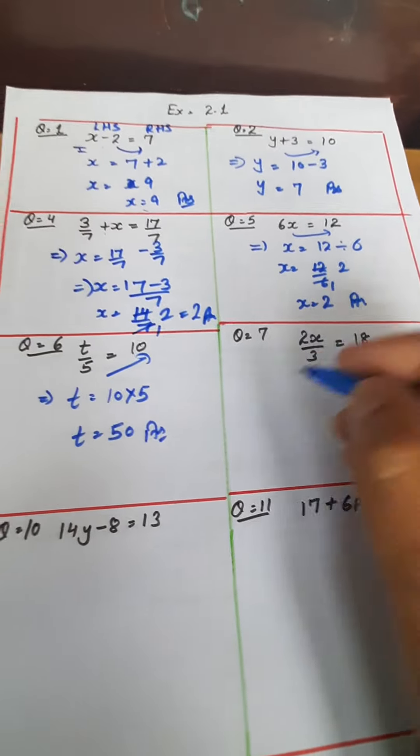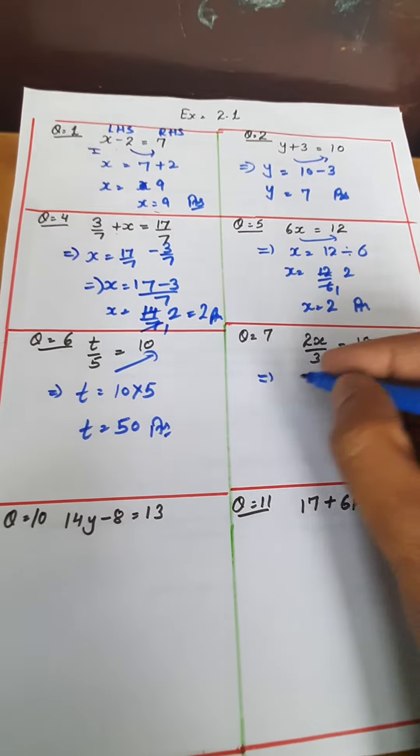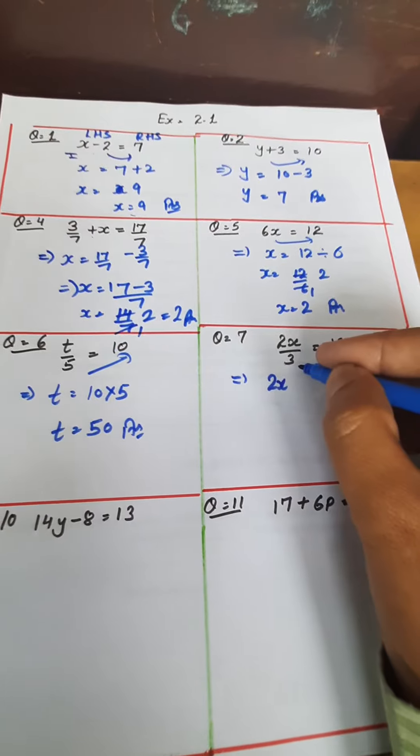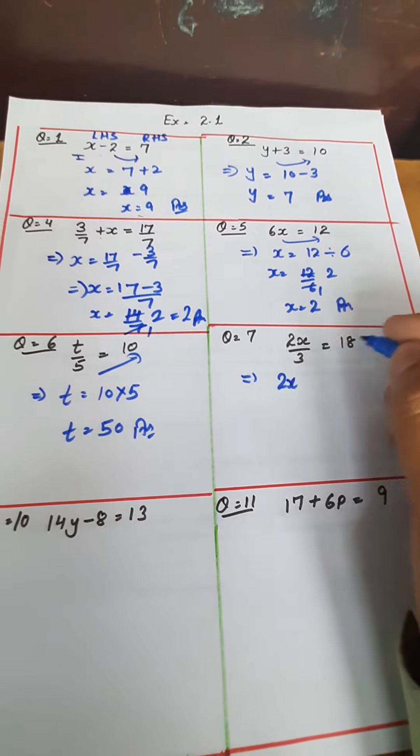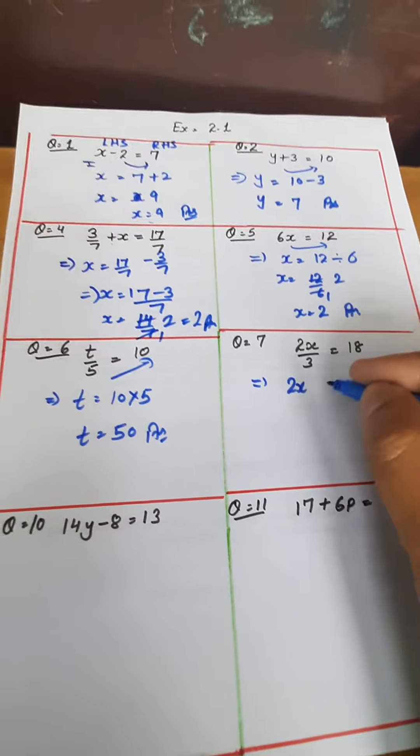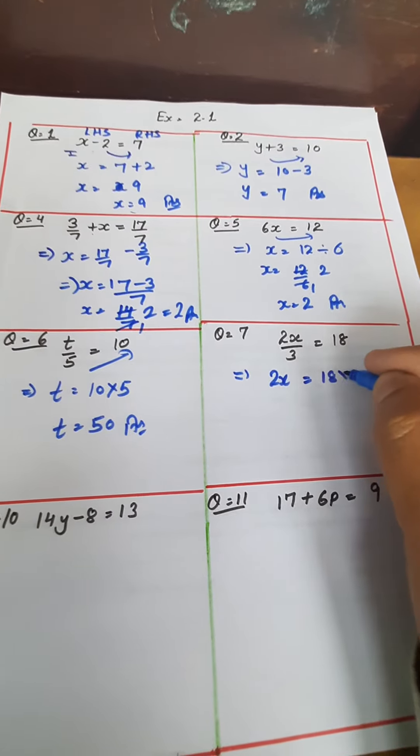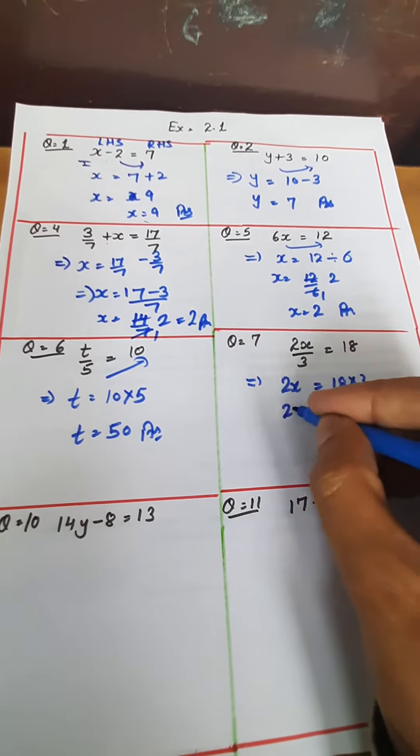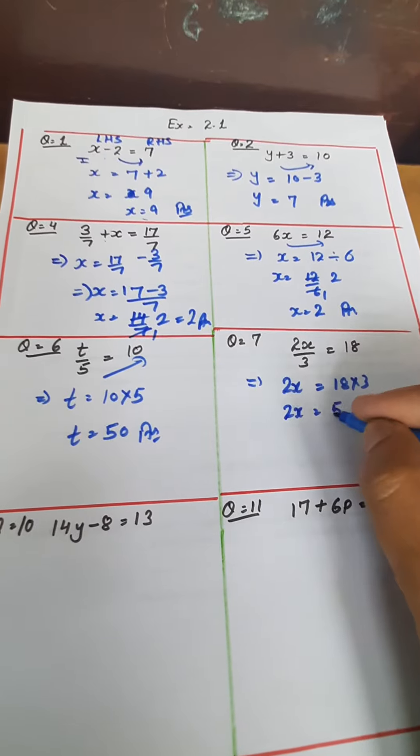Now question number 7. Understand here: 2x upon 3 equals 18. Now the denominator 3 when transferred will be multiplied. 18 into 3. So 2x comes out to be 18 into 3 is 54.